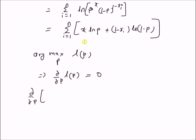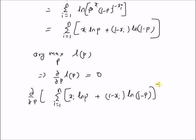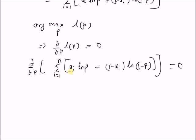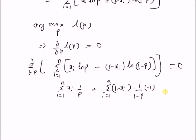So, taking the derivative with respect to p of the summation from i=1 to n of [x_i log(p) + (1-x_i) log(1-p)], and setting it equal to 0: the derivative of the first term gives summation from i=1 to n of x_i times (1/p), and the derivative of the second term gives summation from i=1 to n of (1-x_i) times (1/(1-p)) times (-1), equal to 0.